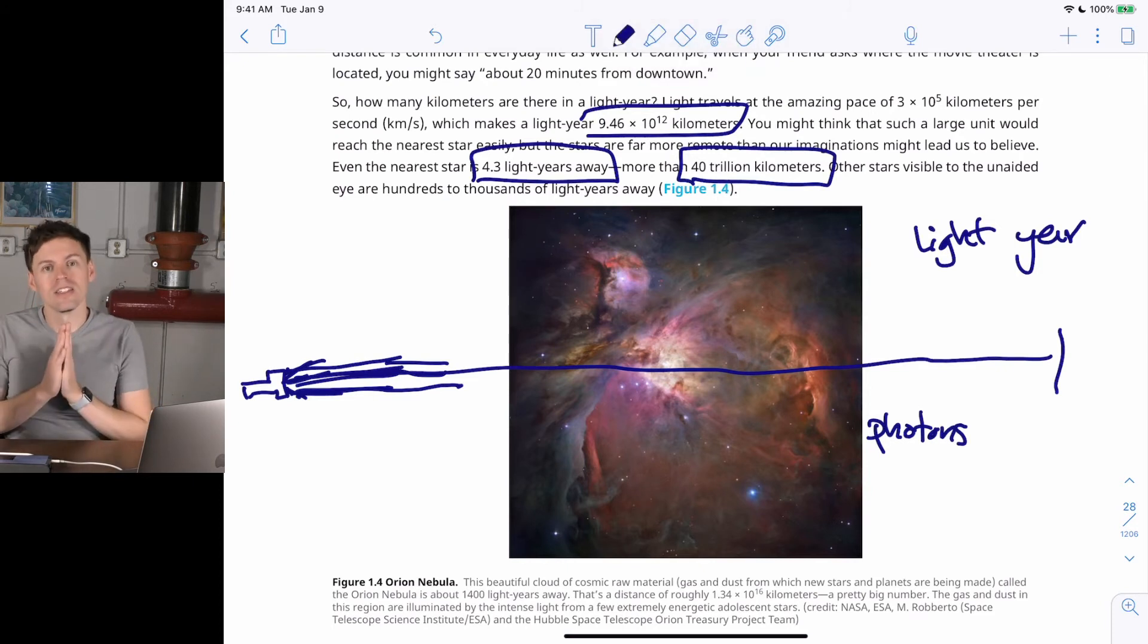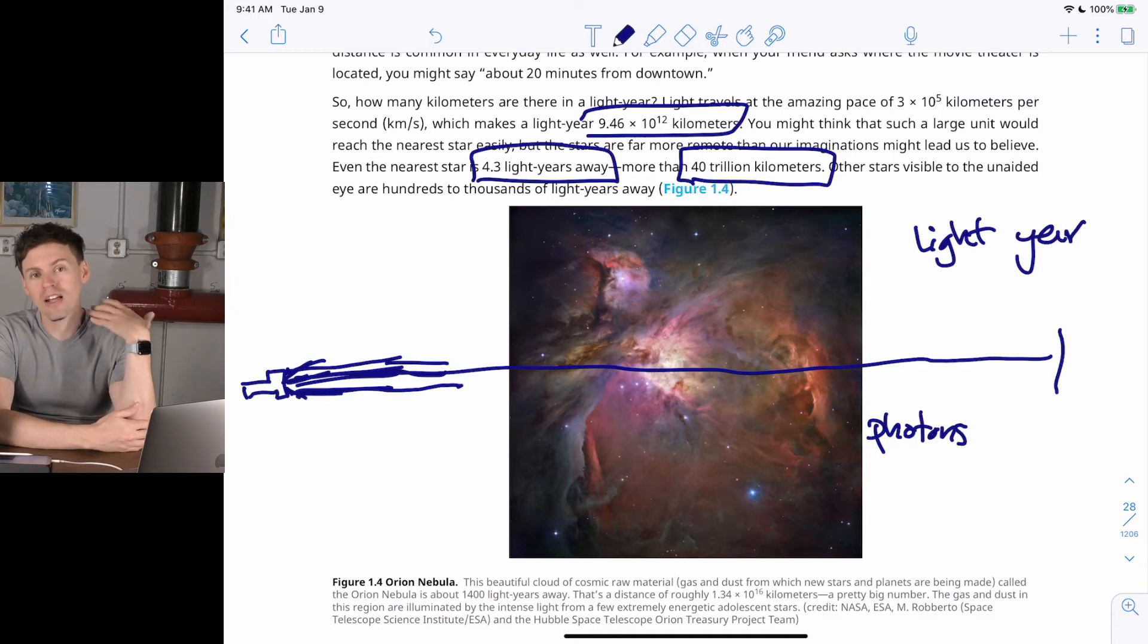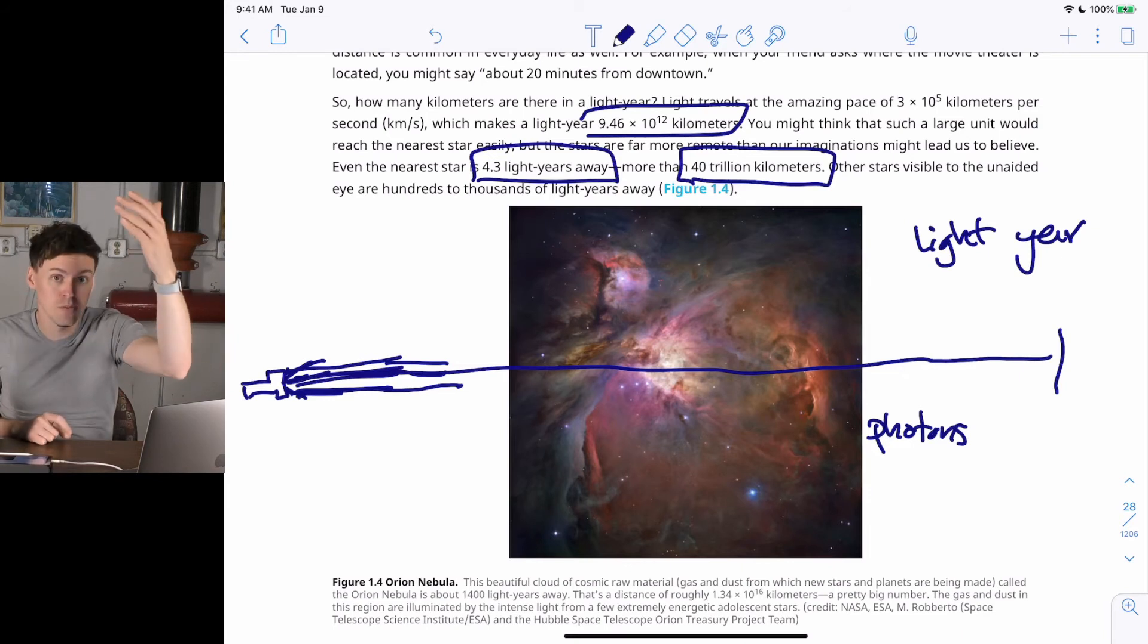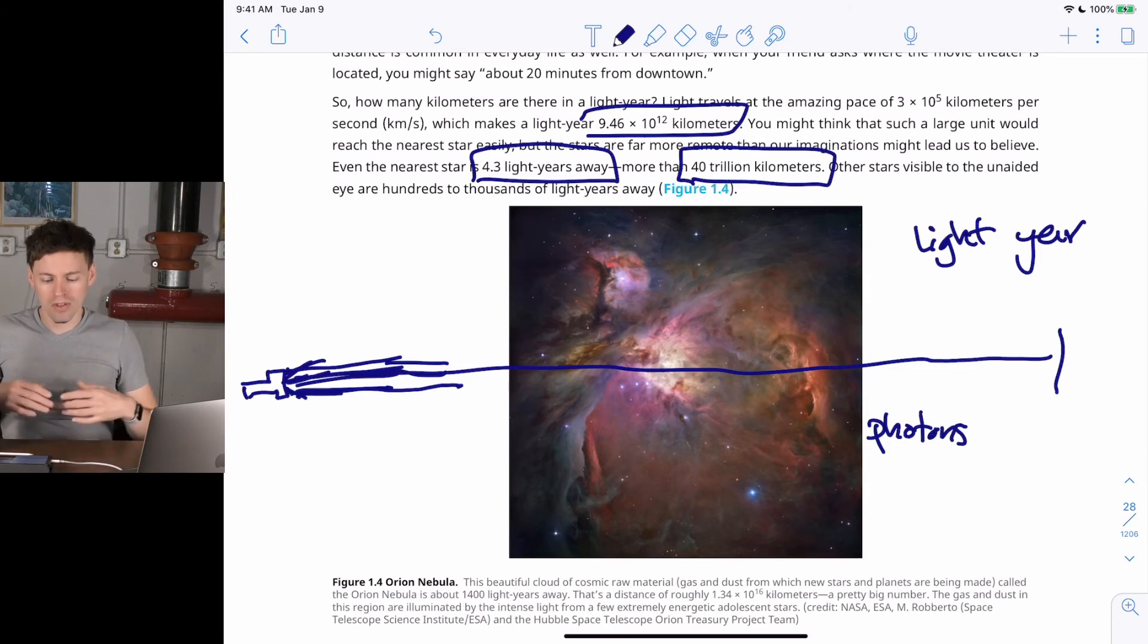So what this means is that Alpha Centauri, the closest star system, it would take 4.3 years for light from Earth to reach that star or light from the star to reach us. So we think about it in terms of when you started your first day of high school, you texted your friend, sent a text message to someone on Alpha Centauri, they would receive it the day you graduated high school, and they would send a reply, and you would get it the day you graduate college. So it would take 8 years to send a signal to Alpha Centauri and get a response.